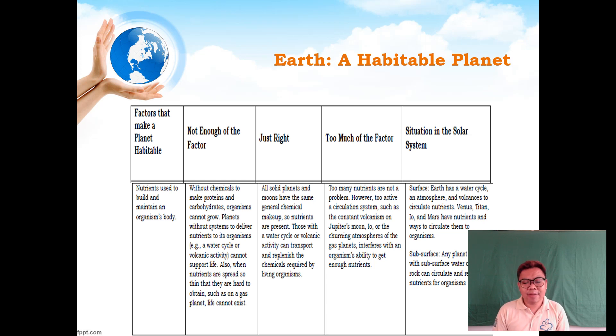If the amount of nutrients is just right, all solid planets and moons have the same general chemical makeup, so nutrients are present. Those with a water cycle or volcanic activity can transport and replenish chemicals required by living organisms. In short, with smooth flow of nutrients, organisms have sufficient supply to maintain life existence.